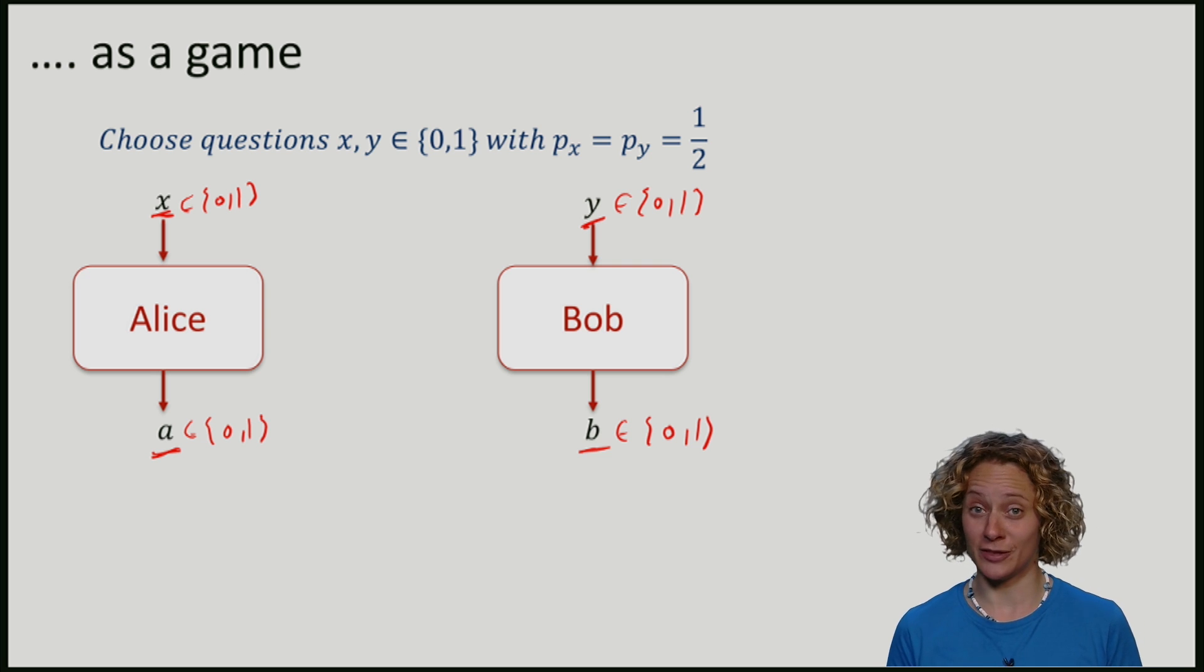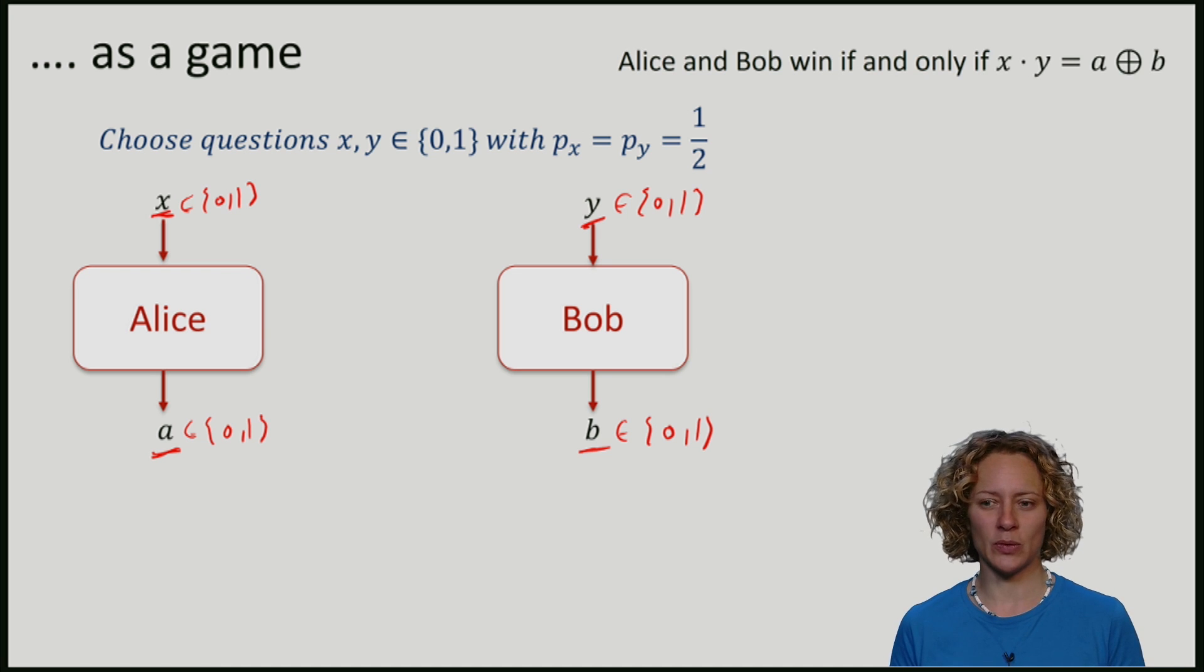Any game has some rules. Here the rule is going to be that Alice and Bob win if and only if x times y is equal to the sum of the answers A and B mod 2.